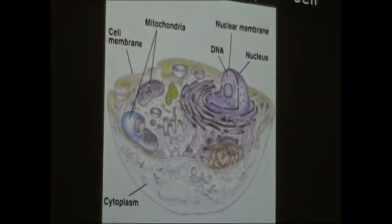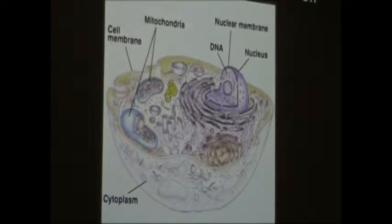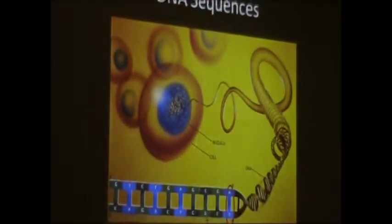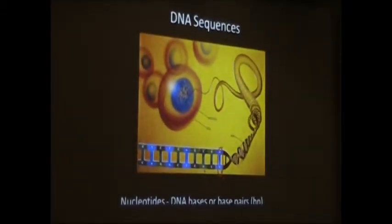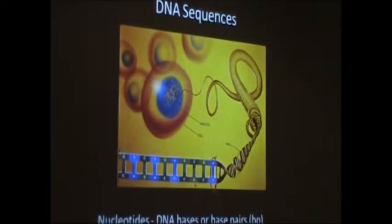That DNA you inherit from both of your parents — on average 50% from your mother and 50% from your father — and it mixes up in very unique ways to make you the unique individual that you are. But there's also in the cell these little structures called mitochondria, and mitochondria also have their own DNA, and that is mitochondrial DNA. The interesting thing about mitochondrial DNA is that it is only maternally inherited. When we talk about comparing DNA, we look at the sequence of the bases — the four letters in the DNA alphabet — and we compare those bases.